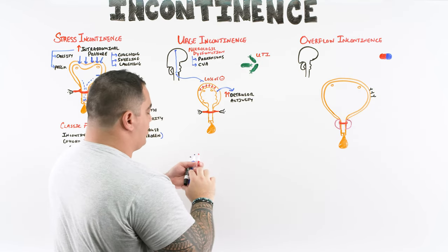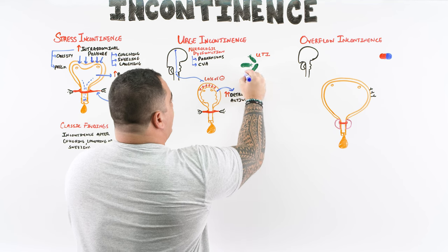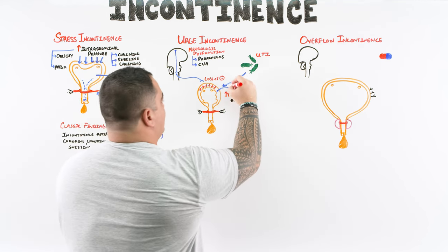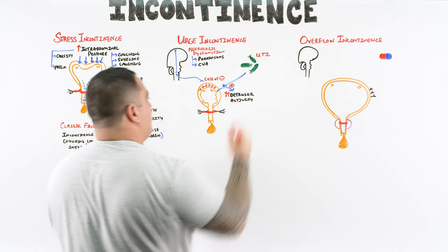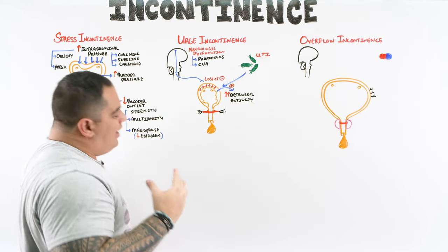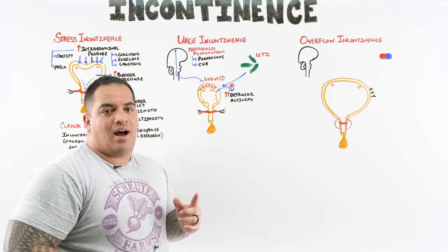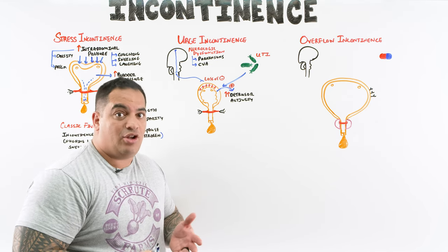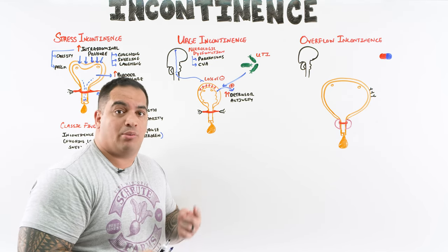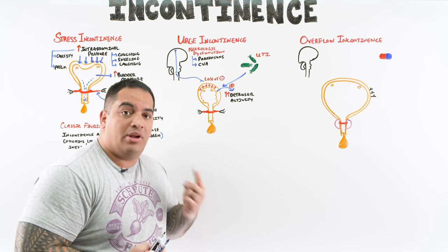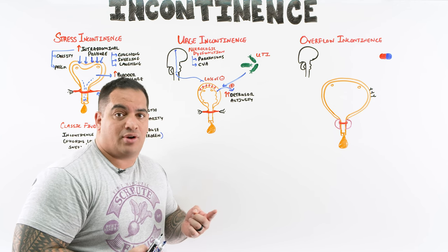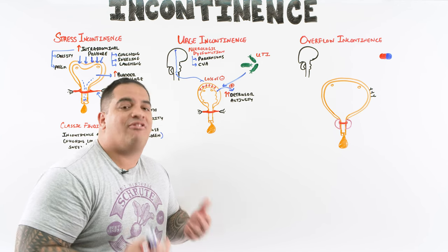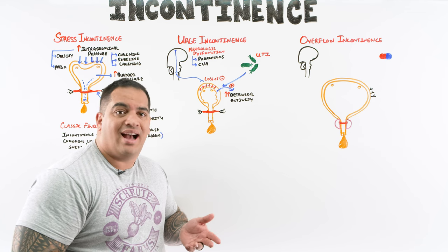Urinary tract infections cause direct mucosal and detrusor muscle irritability, also stimulating increased detrusor activity. Sometimes urge incontinence can be completely idiopathic, but first consider neurological loss of inhibition to the detrusor muscle, or inflammation from infections like UTIs causing increased detrusor irritability.